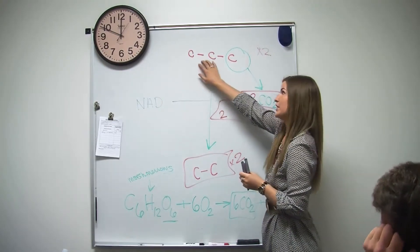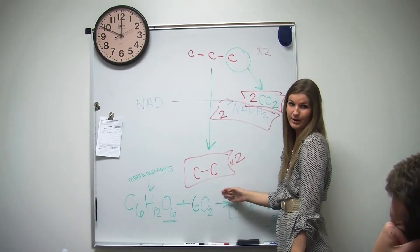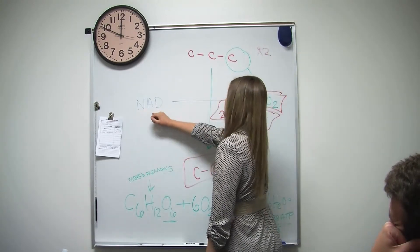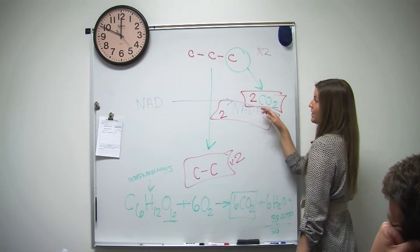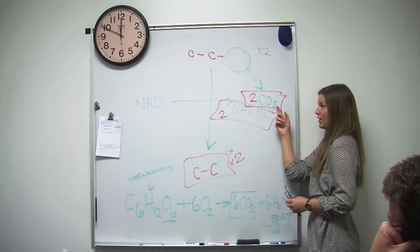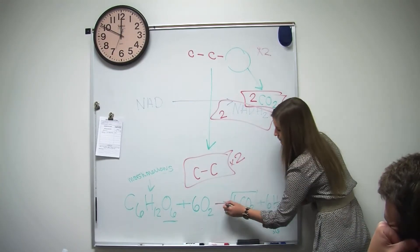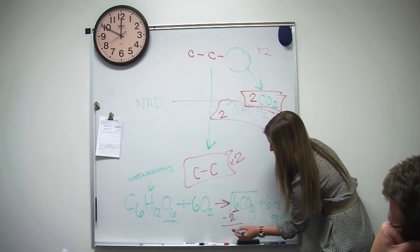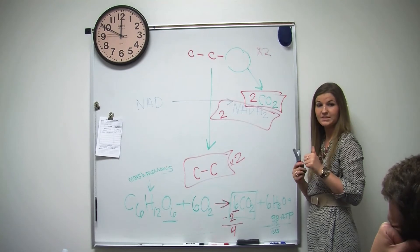Basically what we're going to do is take pyruvate, which is 3 carbons, and turn it into a 2-carbon molecule called acetyl-CoA. To do that, we input some NAD and convert it to NADH. While we do that, we take off one carbon, which goes to form CO2 by combining with oxygen. We need 6 carbons at the end of this entire cycle, so now we have 2, and we'll need 4 more later in our metabolism.